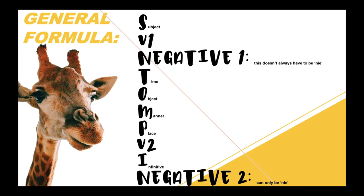Now what is important about this is — I know we sort of tell you all the time that nothing comes after the infinitive — but the 'nie' is the one thing that does. Just remember: if a sentence doesn't end with the 'nie', it is not a negative sentence.